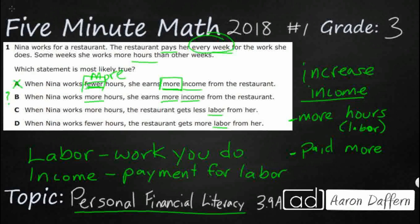Let's see what C and D say. C: when she works more hours, the restaurant gets less labor. No — the more she works, the more labor they get from her, because that's what she's there to do. D: when Nina works fewer hours, they get more labor. No — when Nina works more hours, they get more labor, because those two are directly related. Everything needs to be more-and-more or less-and-less together. So our answer is B: when she works more hours, she earns more income from the restaurant. That's how labor and income work.